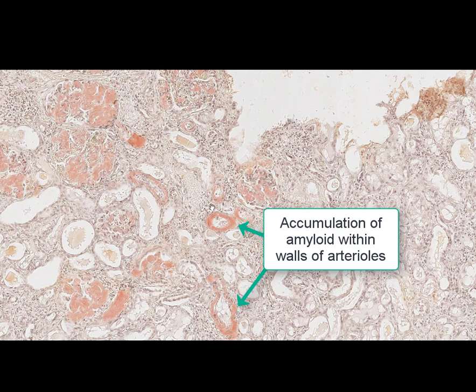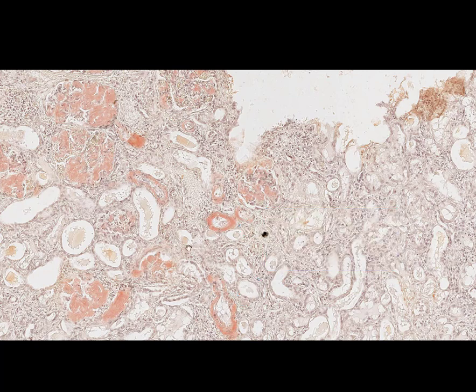As we can see on this slide, the amyloid deposits cannot be found in the parenchymal component of the kidney, specifically not in the tubular epithelium.